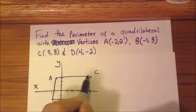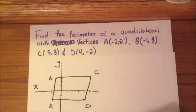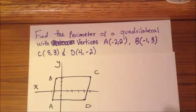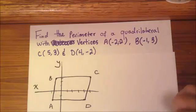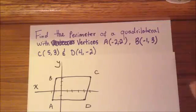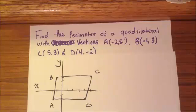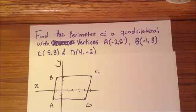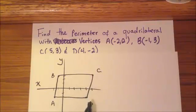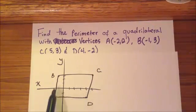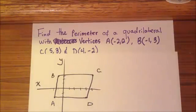So we have some weird squarish shape. This is not necessarily a square or rectangle; it's just an odd-looking quadrilateral. Now, in order for us to find the perimeter, we have to find the length of each side, then add the sides together, because perimeter pretty much means the boundary of our shape. So we have to add AB, BC, CD, and AD together.